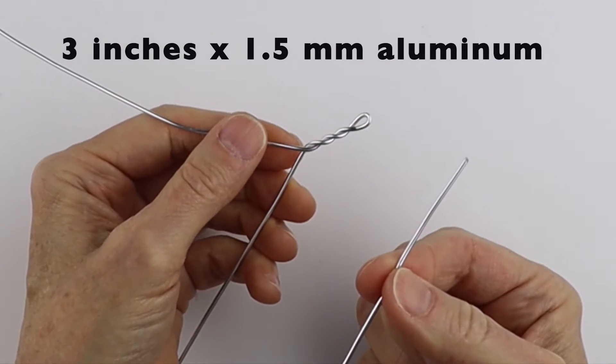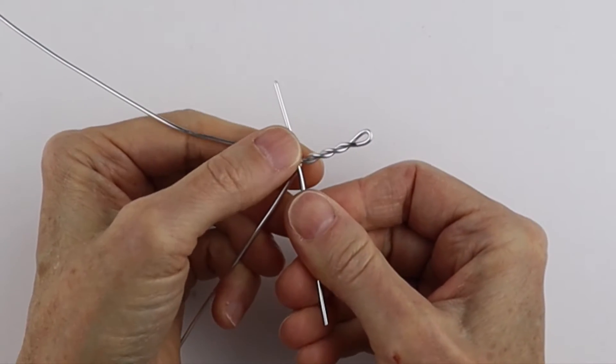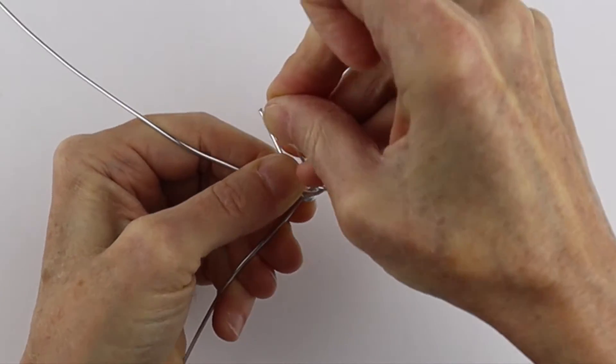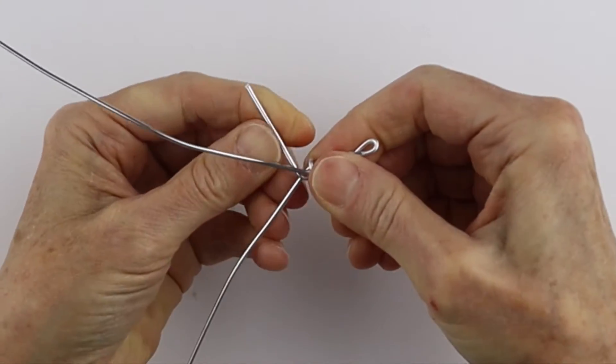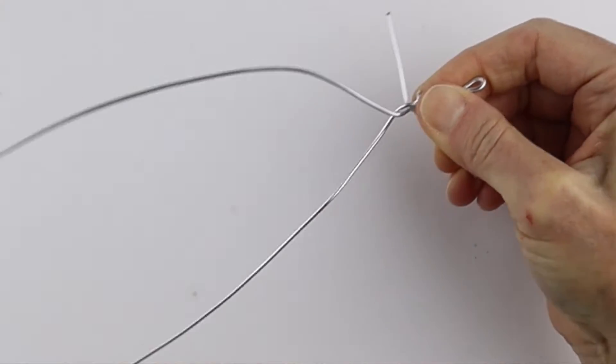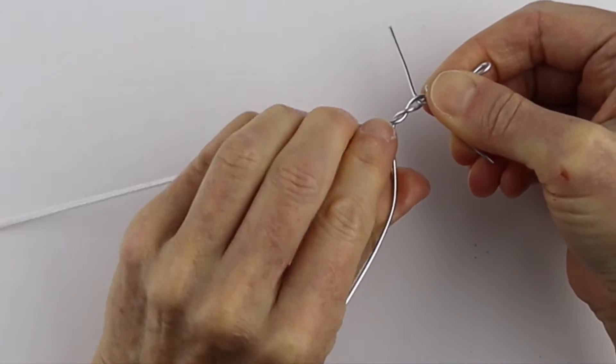Then we're going to take a three inch piece of the same 1.5 millimeter aluminum wire, stick it in there and then just to hold it in place I'm going to give it a little twist here. Just like that and then I'm going to twist this one again. One, two, and three.